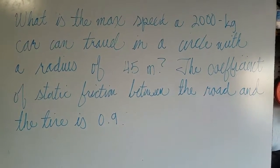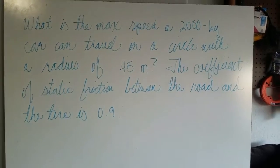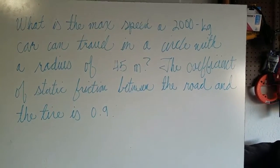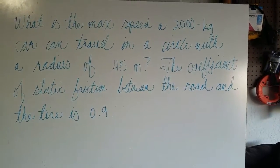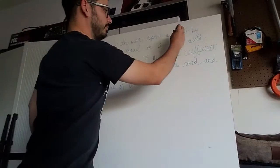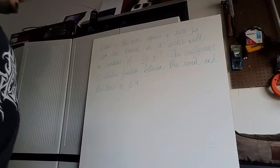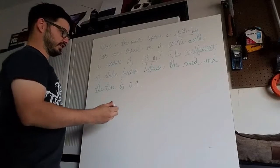We're going to do an example now. The problem is as follows: what is the maximum speed that a 2,000 kilogram car can travel in a uniform circle with a radius of 45 meters? The coefficient of static friction between the road and the tire is going to be 0.9. I encourage you to pause the video and try the problem yourself. We have the mass of the vehicle, the radius of the circle, and the coefficient of static friction.